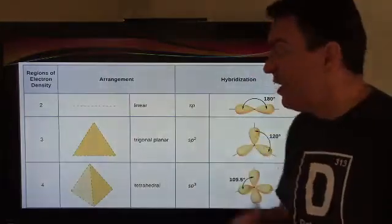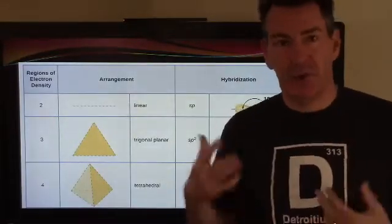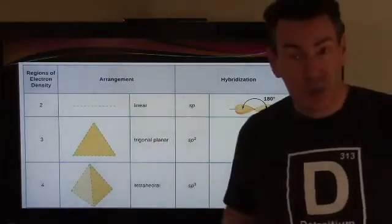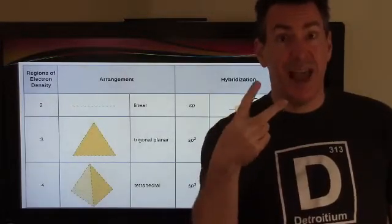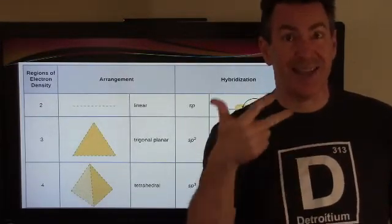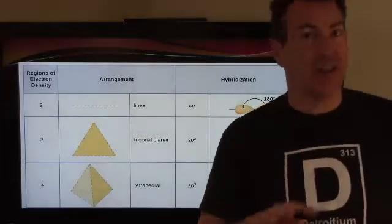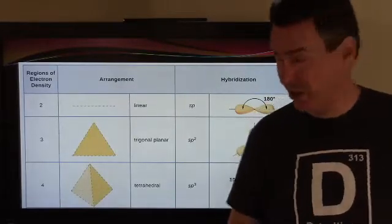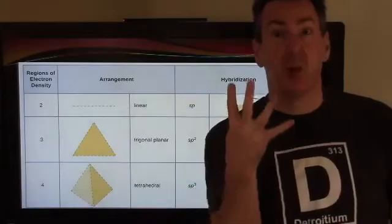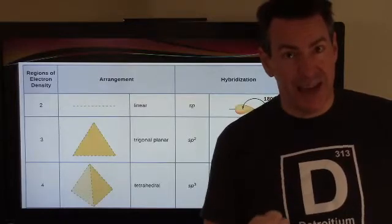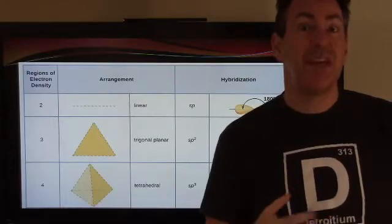If you have three total areas around a given atom — one atom at a time — whether it's a combination of single bonds, double bonds, or triple bonds, the shape is trigonal planar, and the hybridization requires three orbitals: start with an S and you need two P orbitals, so SP2. For tetrahedral, four total areas — very common especially in organic molecules — you need four orbitals: an S and all three P orbitals, so SP3 hybridization.